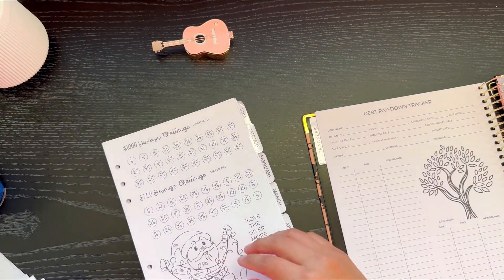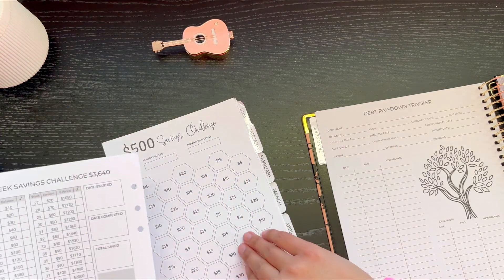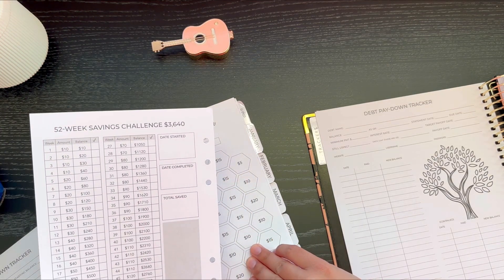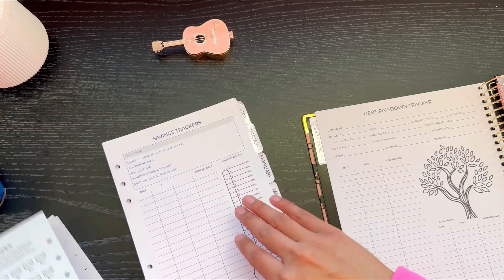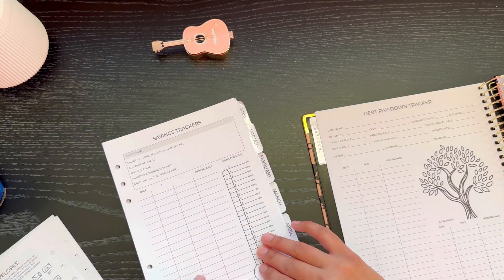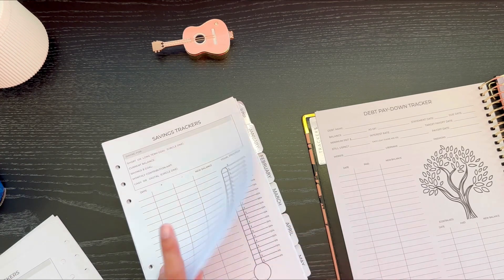And then you get your savings challenges. Same 52-week savings challenge. The 500, the 100 envelope challenge. Savings trackers, exact same as the book.